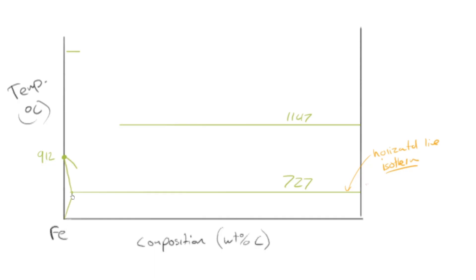You can draw a single phase region there, draw this region. Boom. And there you go. Fantastic. So that's the iron carbon phase diagram at high temperature. Obviously, we've got liquid.